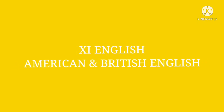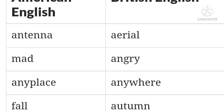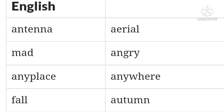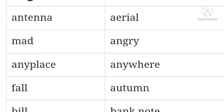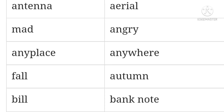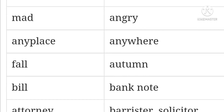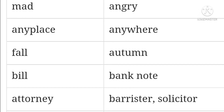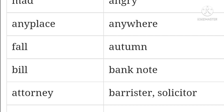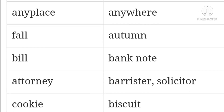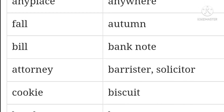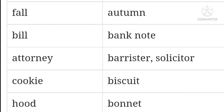Happy day, students! A hearty welcome to everyone. Today we are going to learn Unit 5 book exercise: American English and British English. Antenna (American) / aerial (British). Mad / angry. Any place / anywhere. Fall / autumn. Bill / banknote. Attorney / barrister.